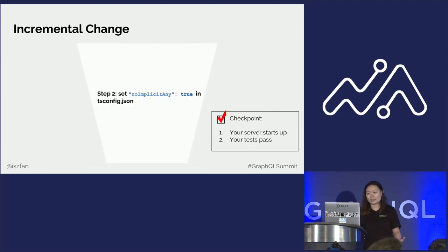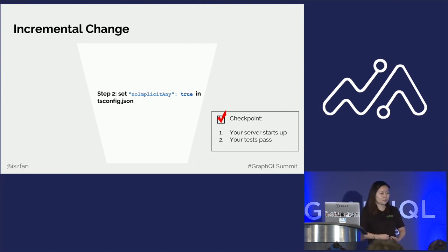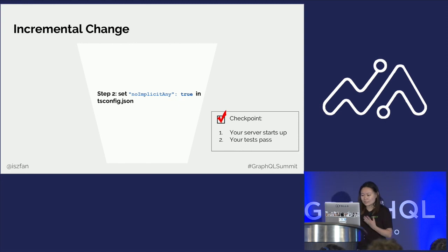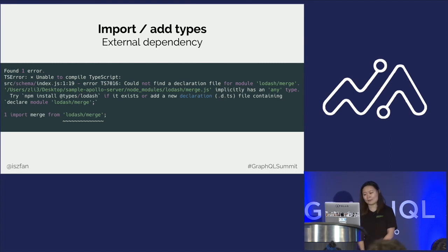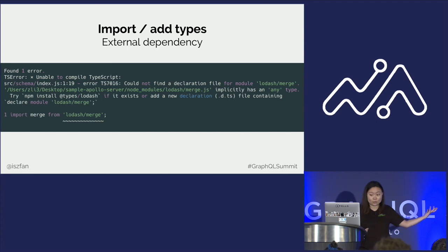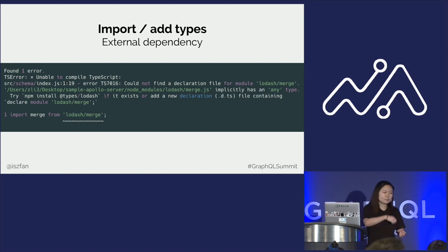The second step is to set noImplicitAny to true in tsconfig.json. When you rename files to .ts, what it actually does is put an 'any' type on every single line of your code. Enforcing noImplicitAny to true forces you to start adding types. When you start the server, you'll probably see errors about missing types for external dependencies. The TypeScript community handles this well — there are tons of external packages just for types. For example, for Lodash, you can install @types/lodash to solve this issue. For internal dependencies without type declarations, you would add the type declaration at this step.